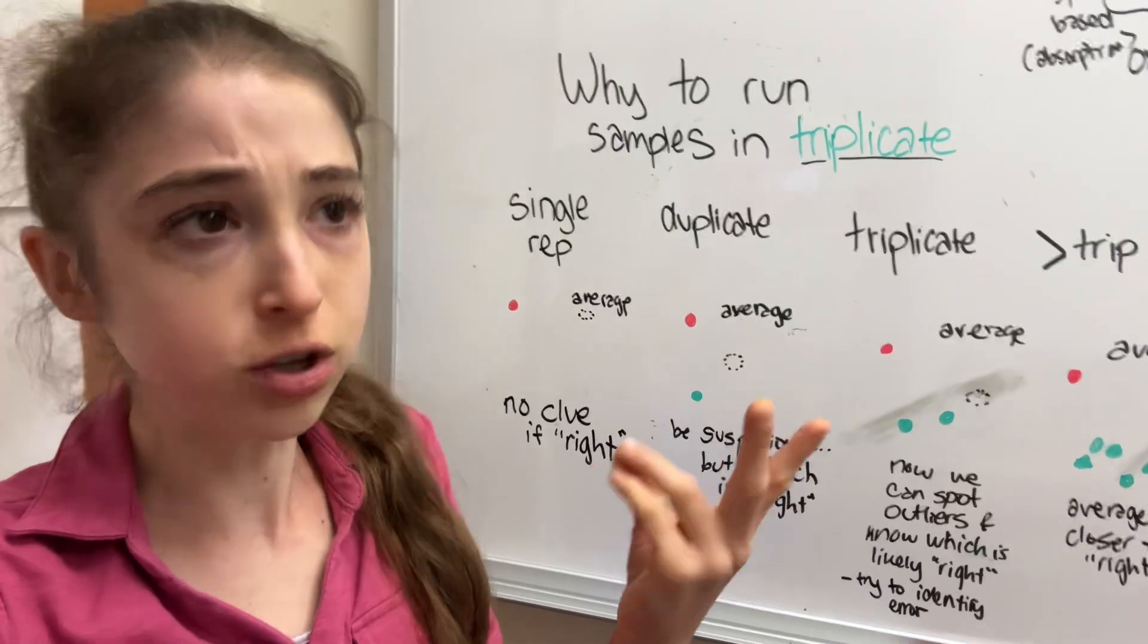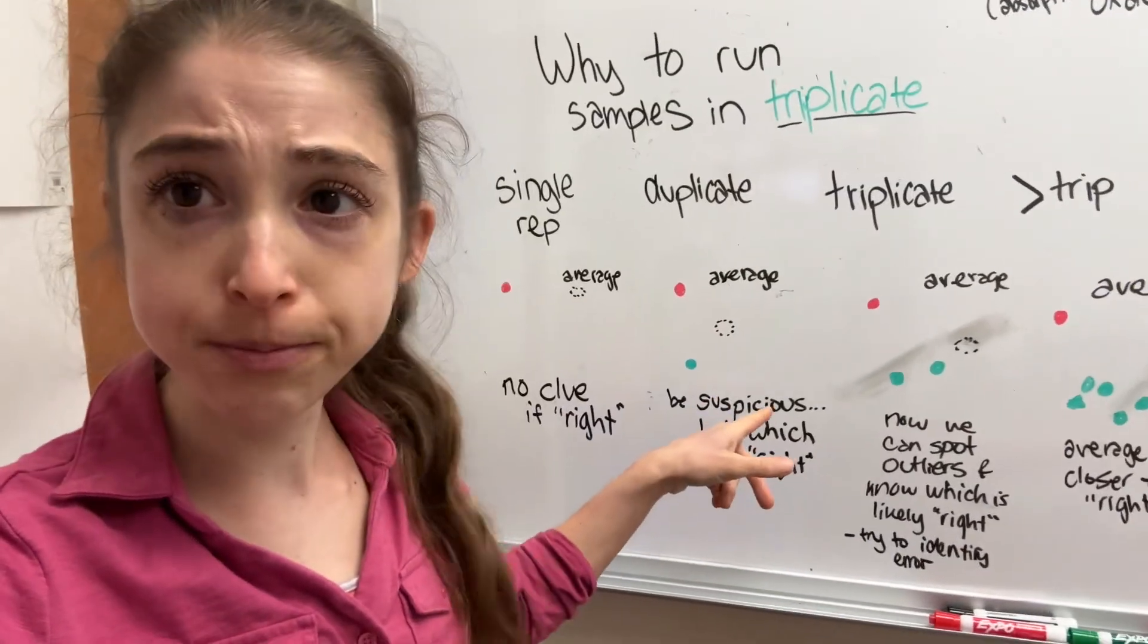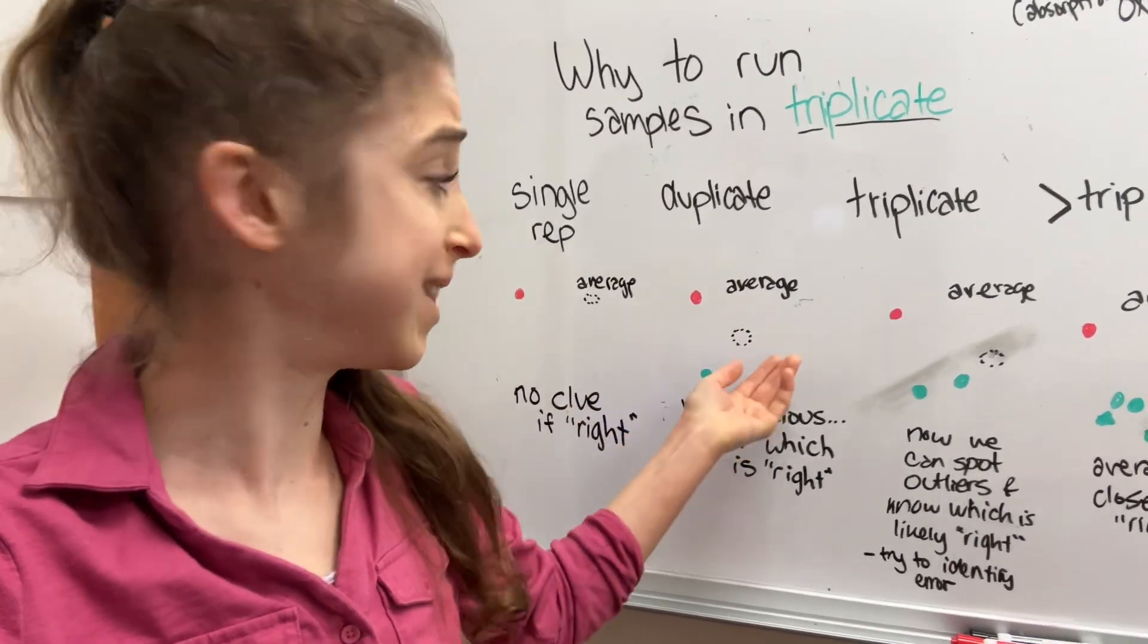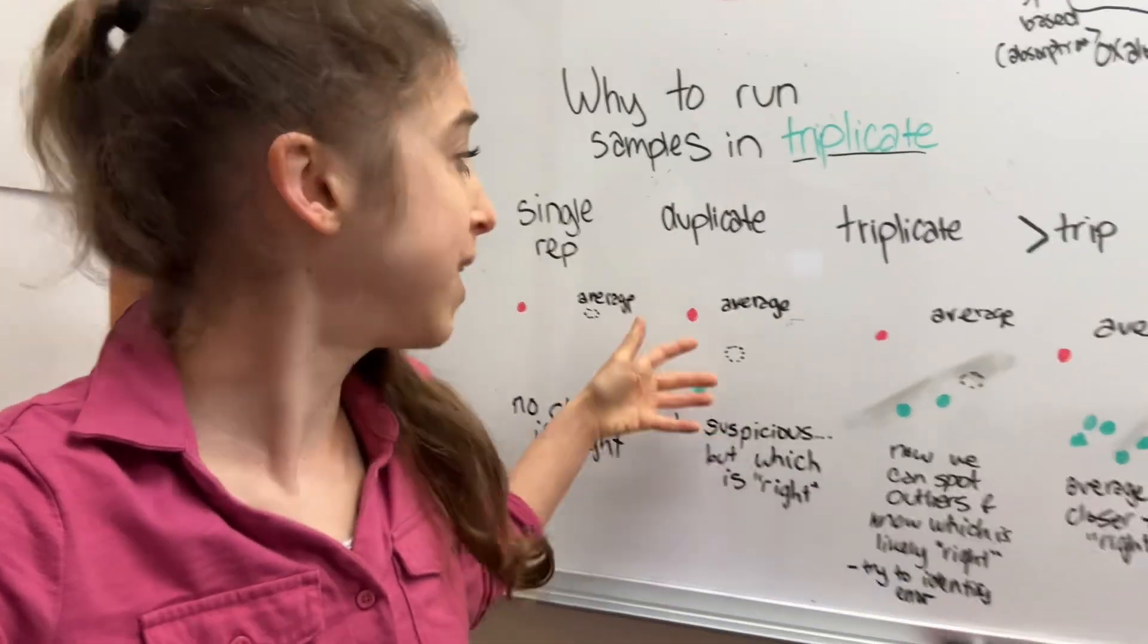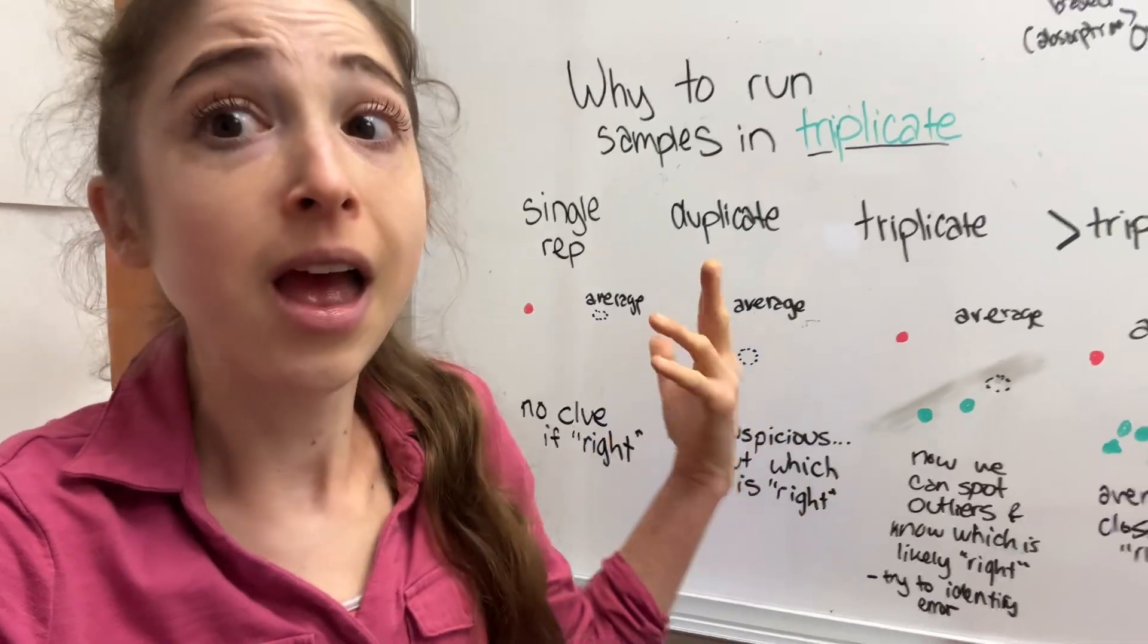Okay, so two sounds reasonable, right? We run two samples. Now we get two very different numbers. If we average them, we get the middle between them, but that average could be super wrong, and we have no idea which is correct because we only have two points. What do we do?